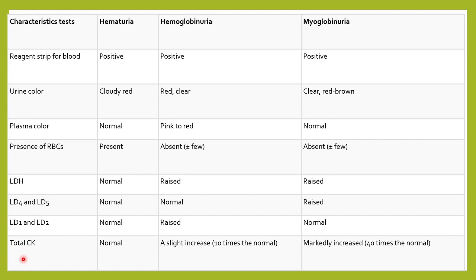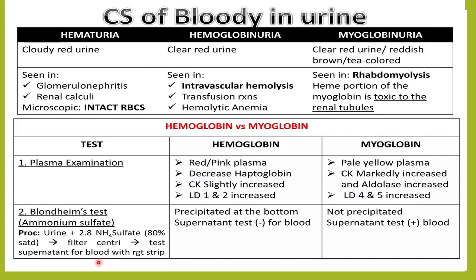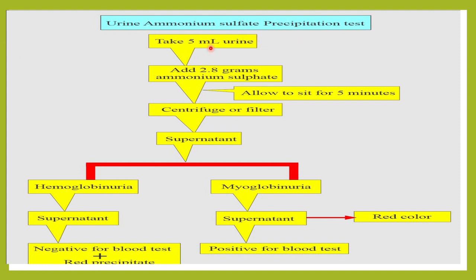Total CK (creatine kinase) is very high in myoglobinuria because it is found in the muscles, whereas there may be a slight increase in hemoglobinuria, and it is normal in hematuria. Another test used to differentiate them is the ammonium sulfate test — you take 5 ml of urine, add 2.8 grams of ammonium sulfate, allow it to stand for 5 minutes, then centrifuge or filter and take the supernatant. In hemoglobinuria the supernatant is negative for blood, whereas in myoglobinuria the supernatant is positive for blood.